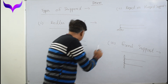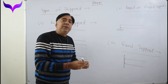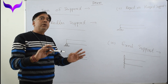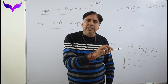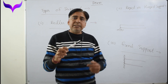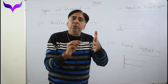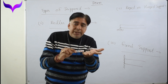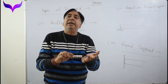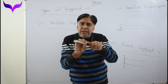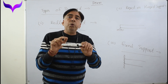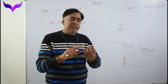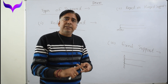According to these supports, reactions develop. Reactions develop when we prevent the body from moving. When a body can move freely in any direction, no reaction will come. When we stop the body from moving, a reaction develops. There are three types of reactions: horizontal reactions, vertical reactions, and moment reactions.